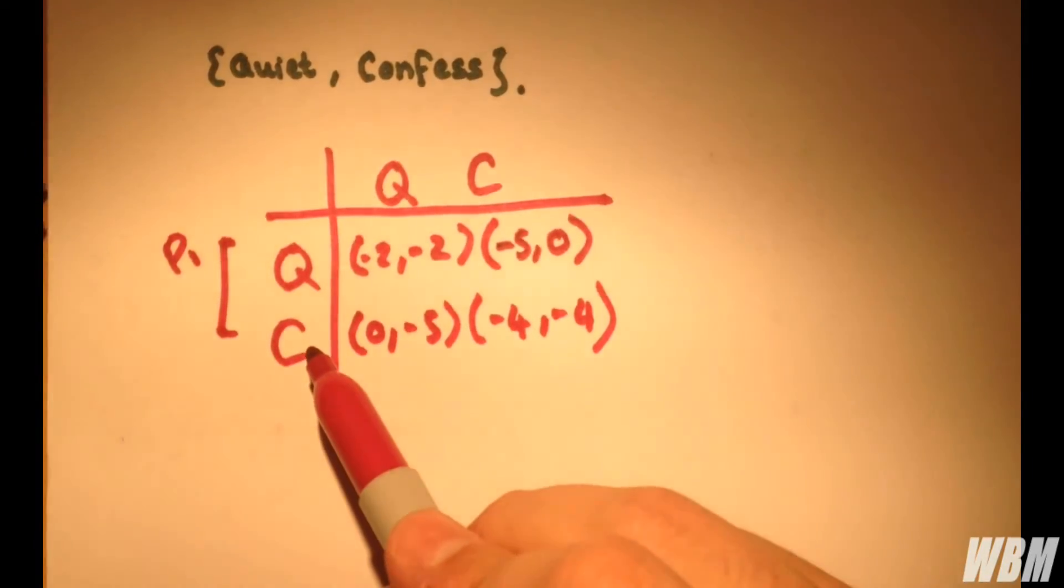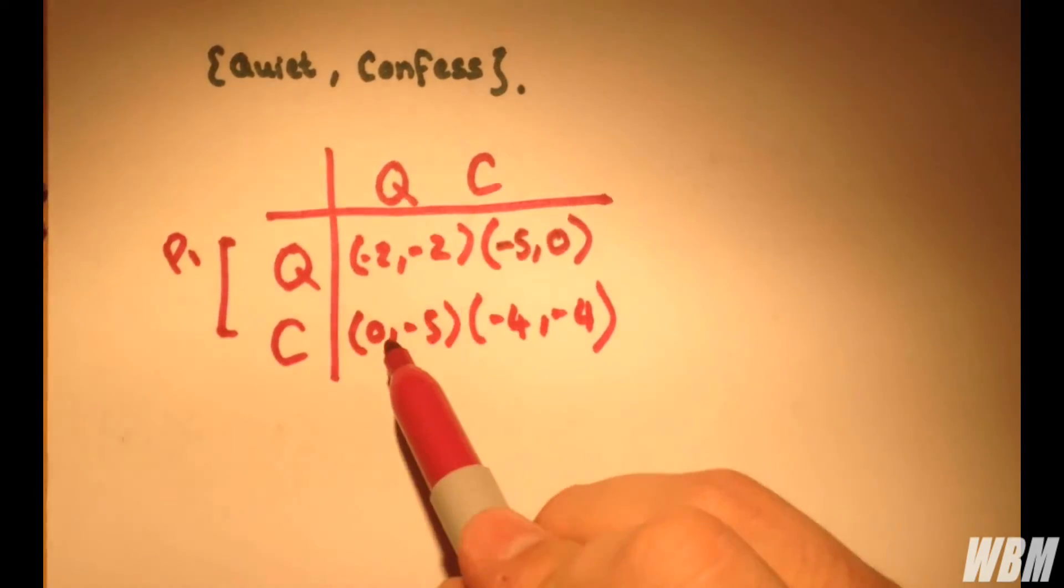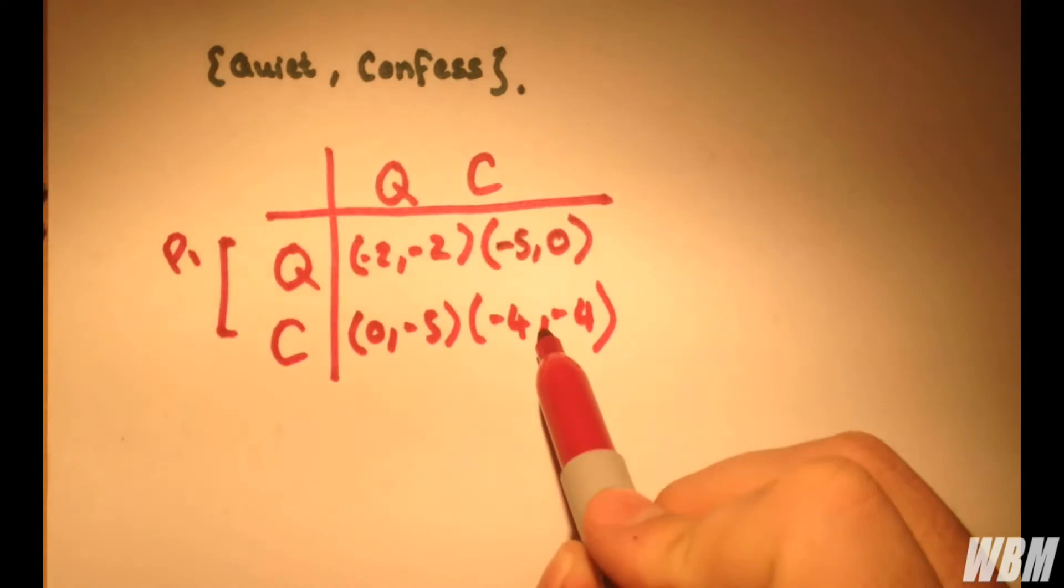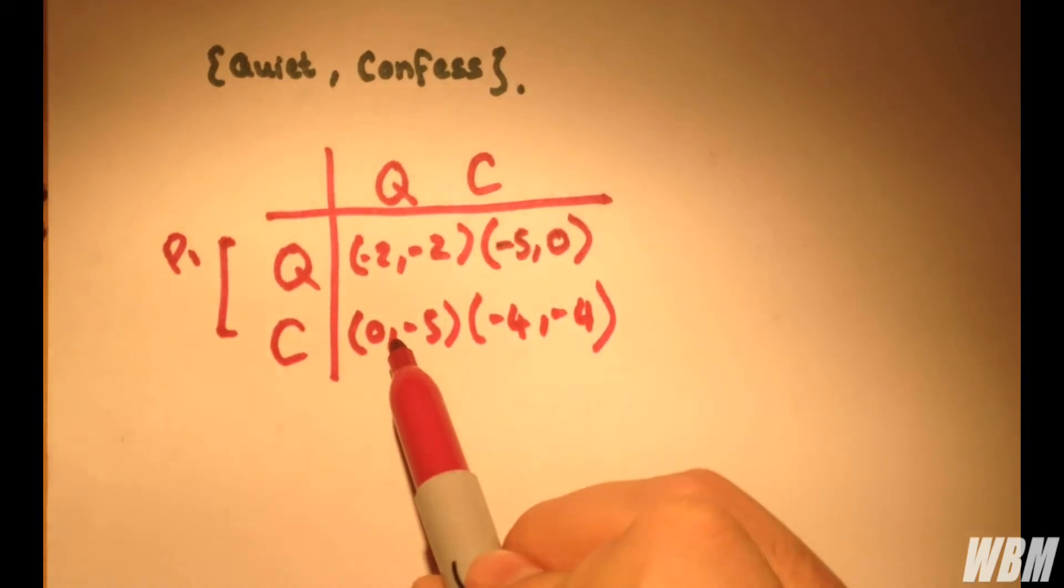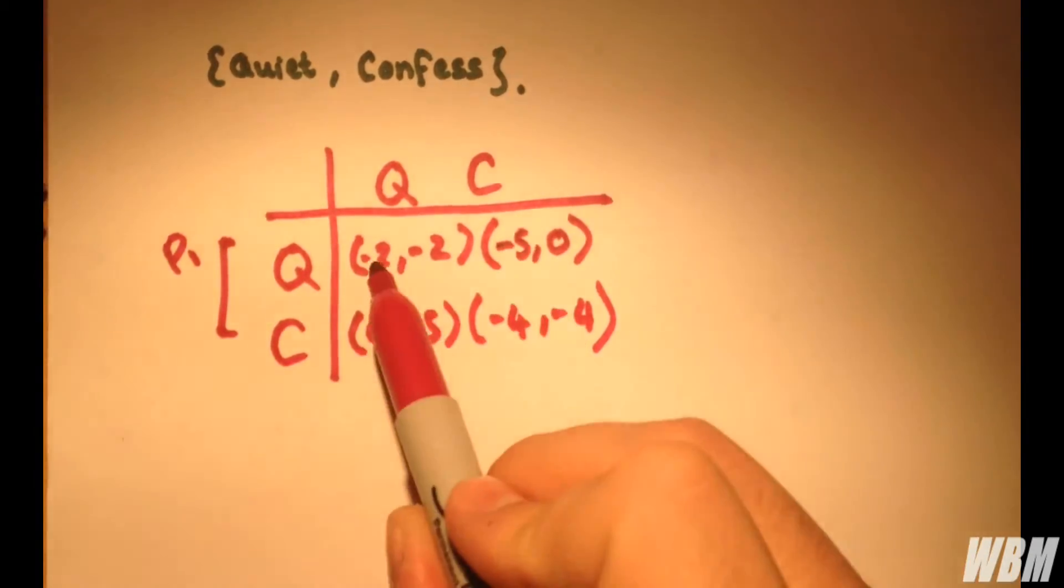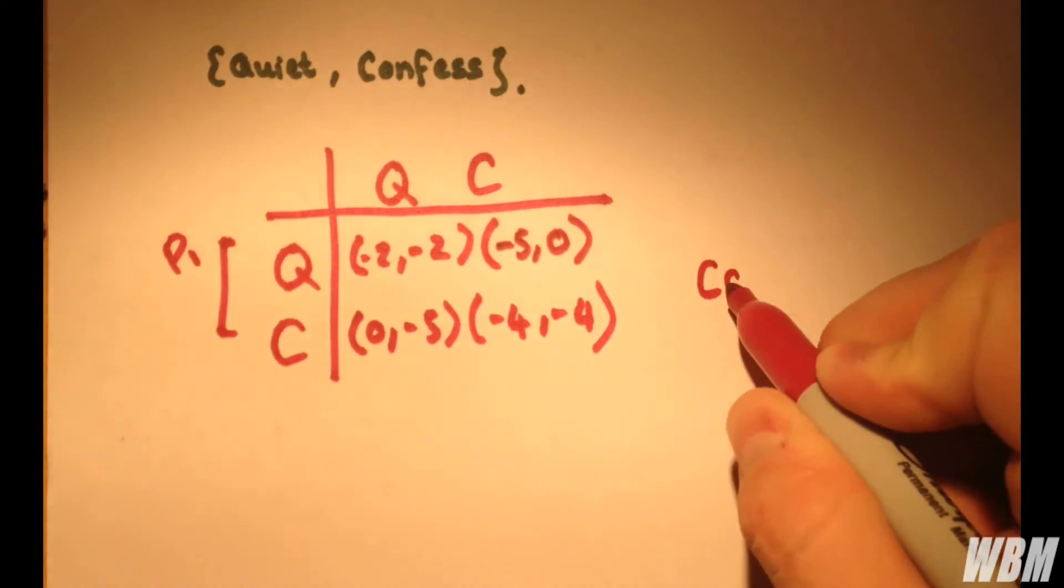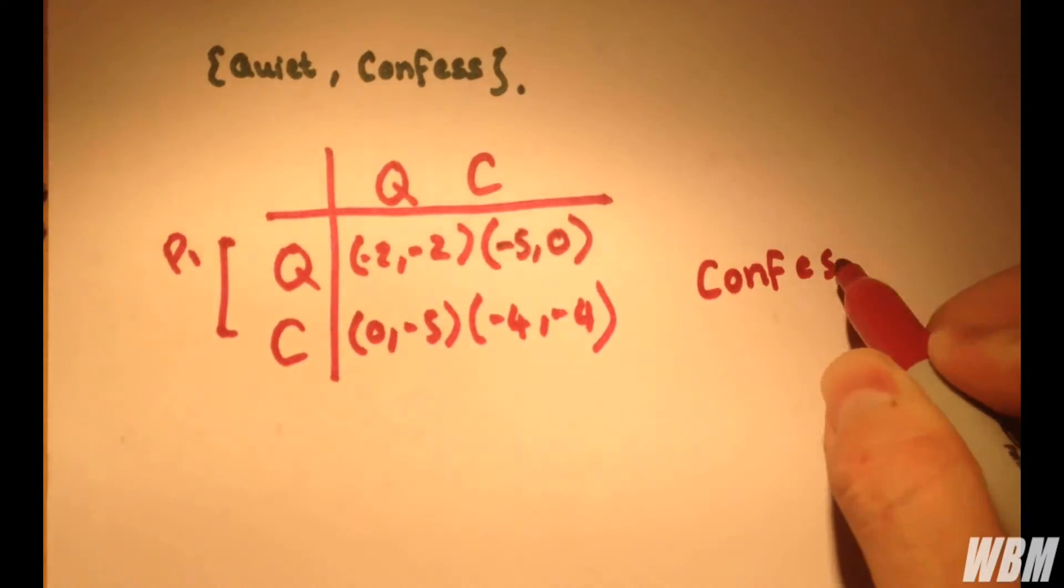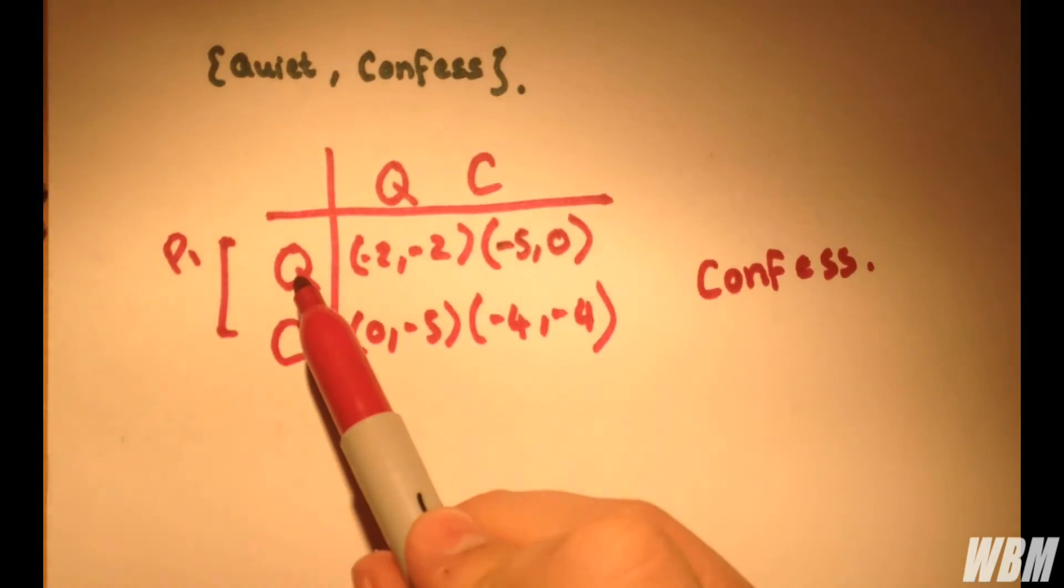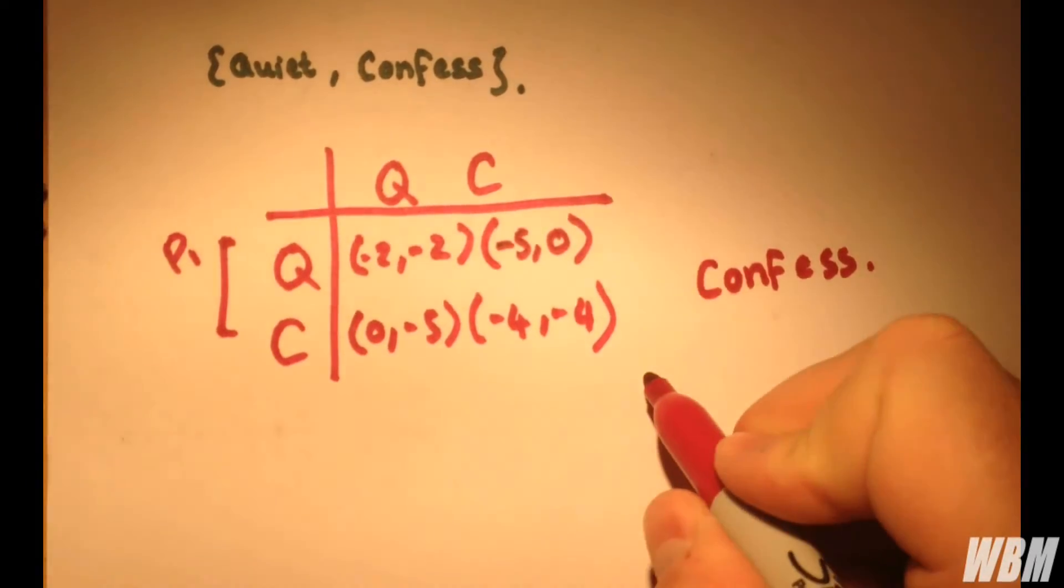If Prisoner 1 chooses to confess and the other guy stays quiet, he'll get let off. And if they both confess, they both get four years. So we have a choice here between minus four and zero, and minus five and minus two. Clearly the choice is to confess. This is because of the dangers of keeping quiet, being sent to prison for five years. So C is always better than Q, and the solution will be CC.